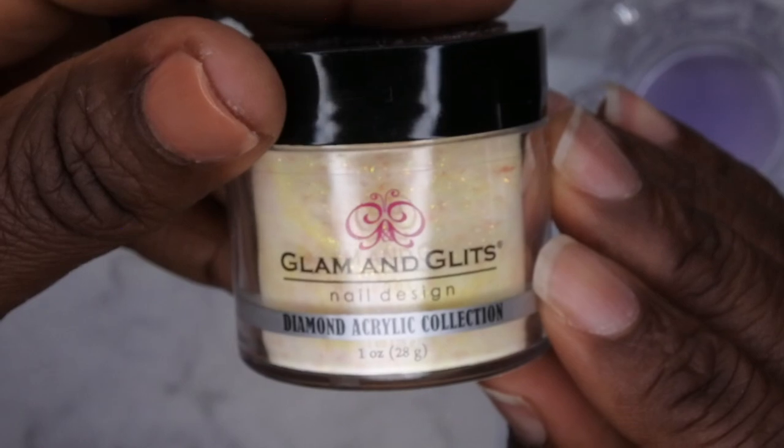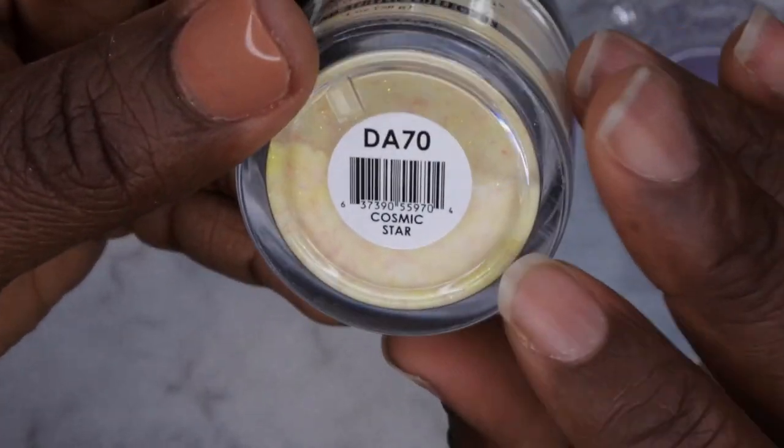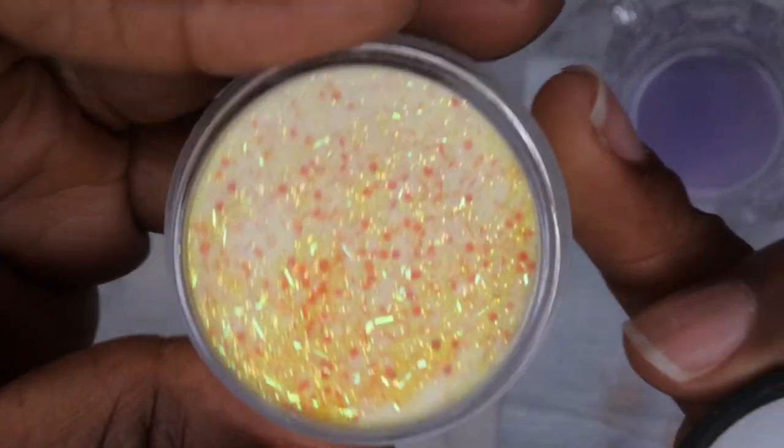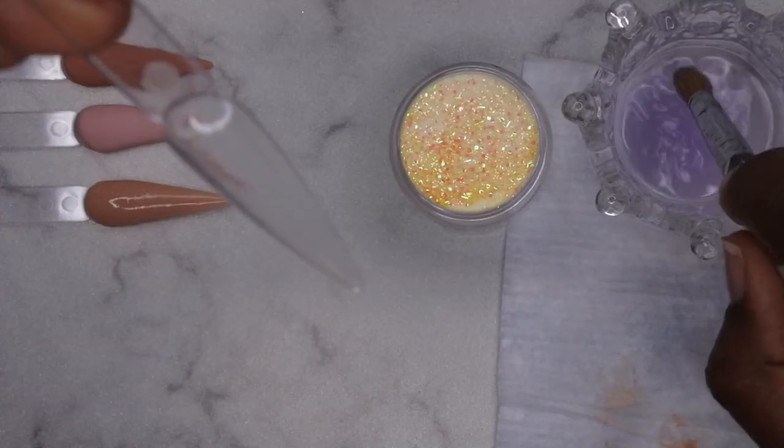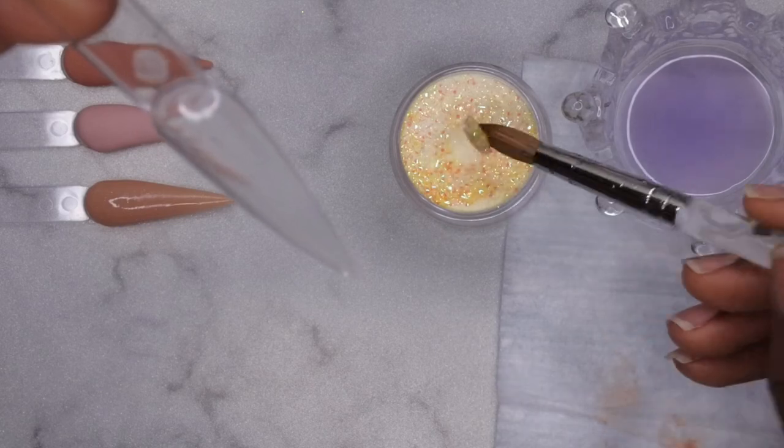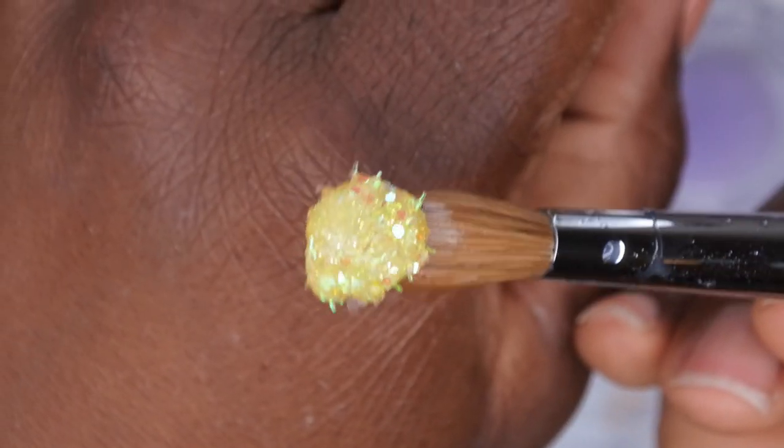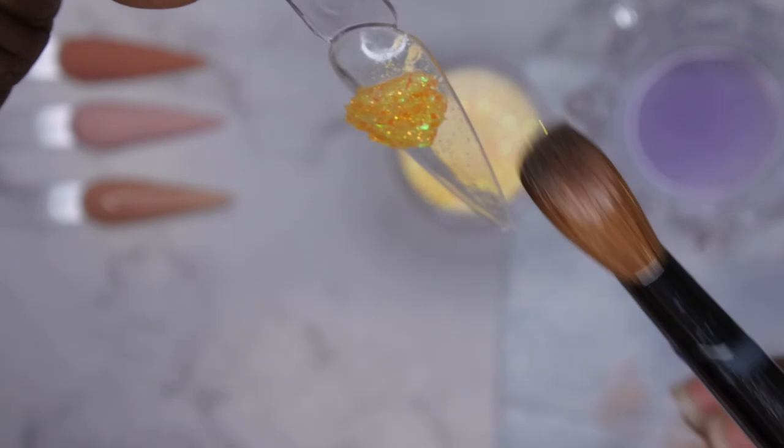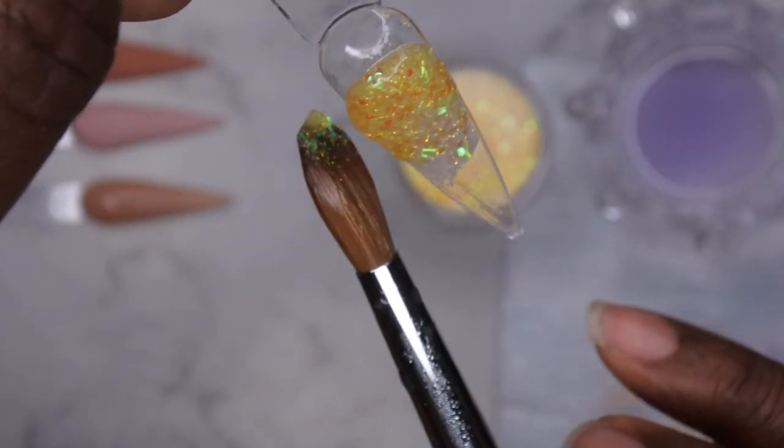Next, I'm going to go in with Glam and Glitz. And this is Cosmic Star. And this is a really beautiful, stunning acrylic. Oh, that is just really beautiful. Wow.